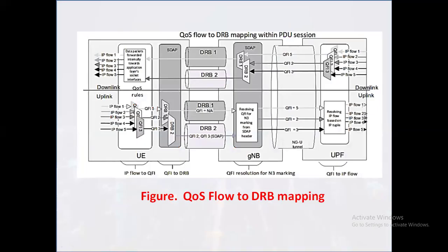This diagram illustrates the mapping process between QoS flows and data radio bearers (DRB) in 5G networks. QoS flows represent specific service requirements — for example, video streaming and online gaming — while DRBs are logical channels that carry user data over the radio interface. The figure shows QoS flow IDs (1, 2, 3, 4, 5, etc.), which are unique identifiers for each QoS flow, along with uplink and downlink directions. QoS characteristics include priority and latency as service requirements for each QoS flow.